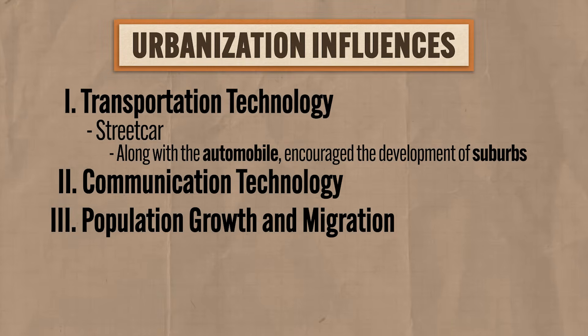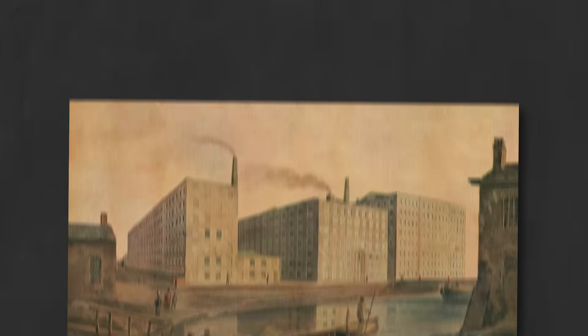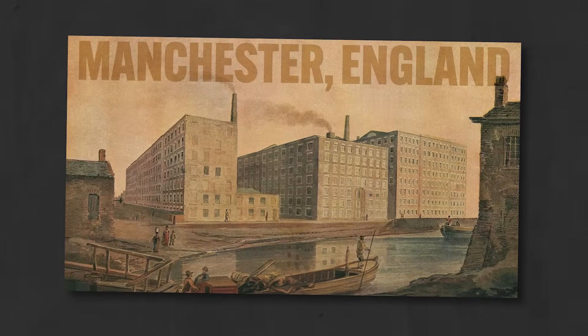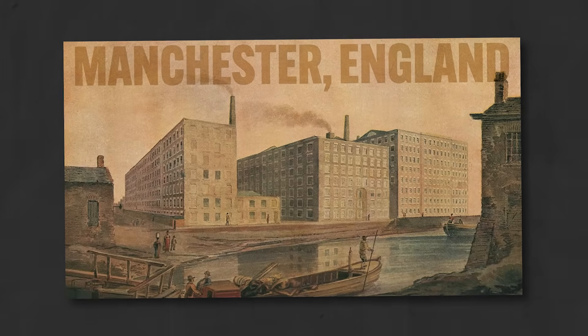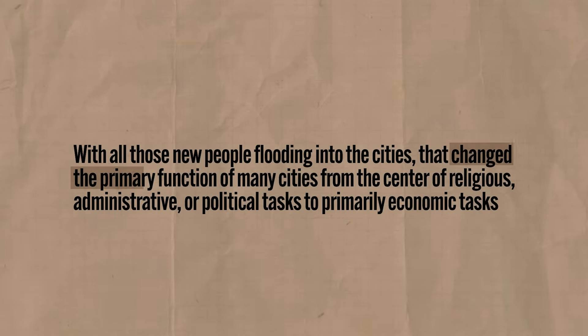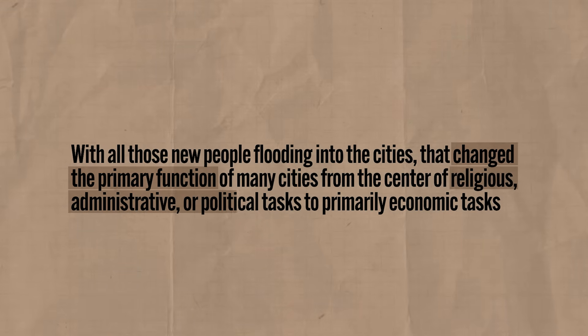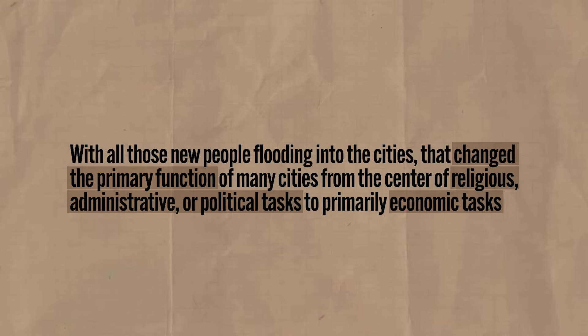The fourth factor influencing urbanization is economic development — and for that let's revisit the industrial revolution. As the economies of major cities organized themselves around industrial production, rural-to-urban migration exploded. With all those new people flooding into the cities, that changed the primary function of many cities from centers of religious, administrative, or political tasks to primarily economic tasks. And when people come streaming in to work and live, the necessary infrastructure would need to be provided as well.